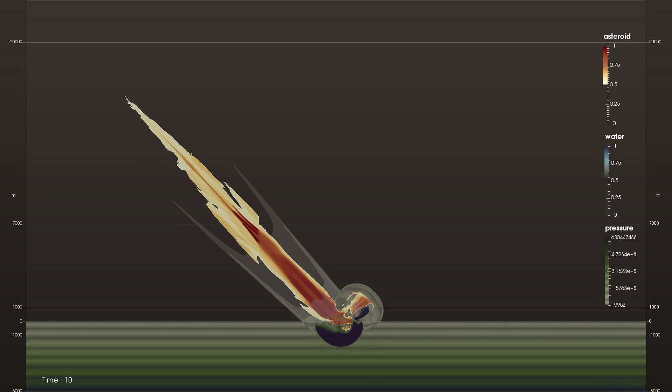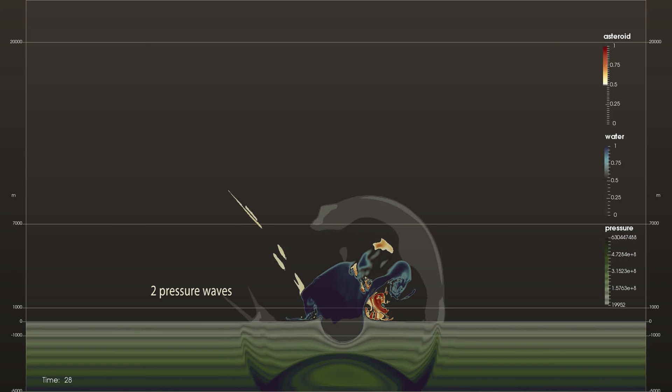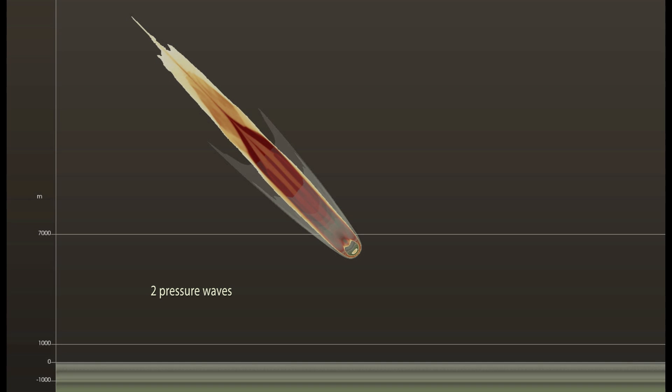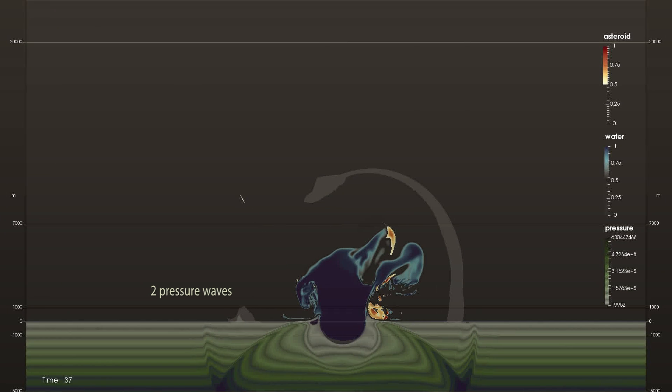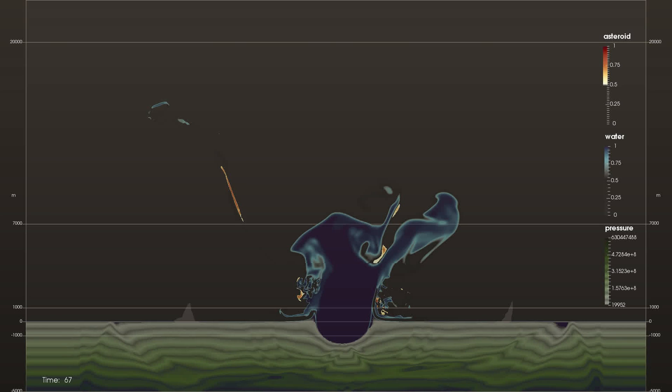A feature discovered through this visualization is a pressure enhancement uprange of airburst impacts. Two pressure waves combine to create this, one from the asteroid in its trajectory, and one from the explosion when the asteroid material hits the water. This may affect wave propagation and will have to be studied.